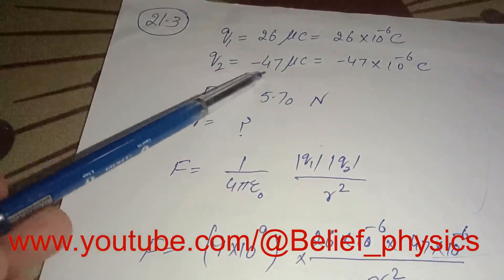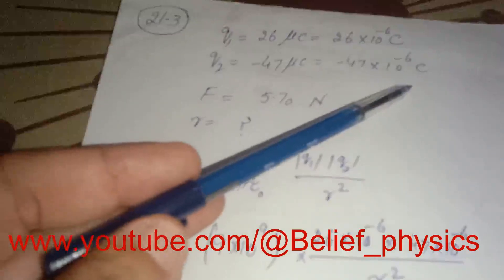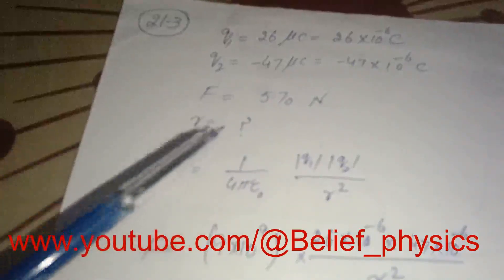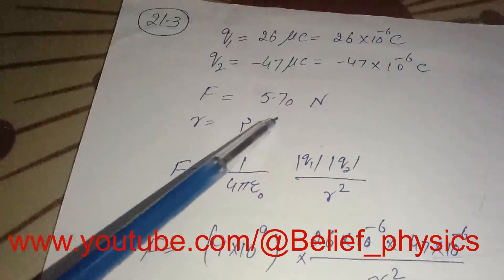And q2 is minus 47 microcoulombs, so it will be minus 47 × 10^-6 coulombs. The magnitude of the electrostatic force between them is 5.70 Newtons.